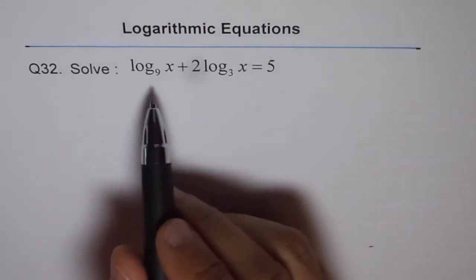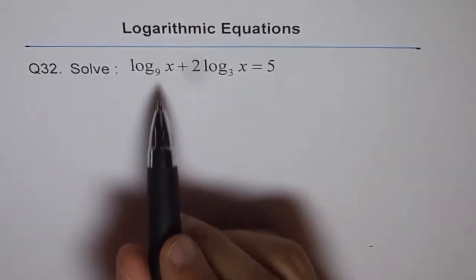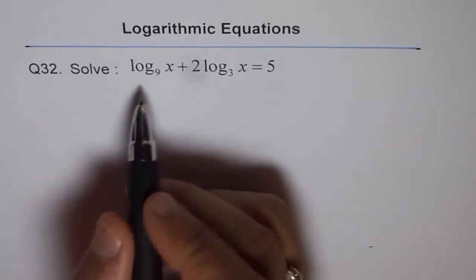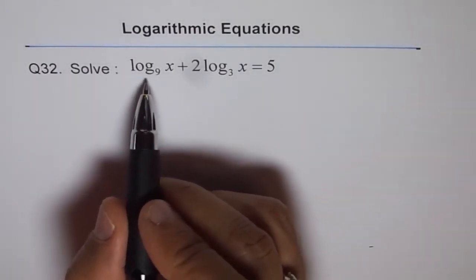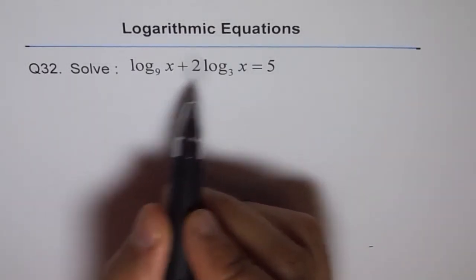Solve log base 9 of x plus 2 log base 3 of x equals 5. In this equation we don't have the same bases, so we need to put them in the same base.